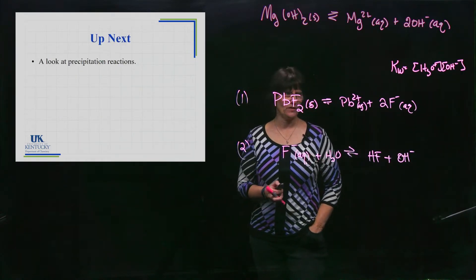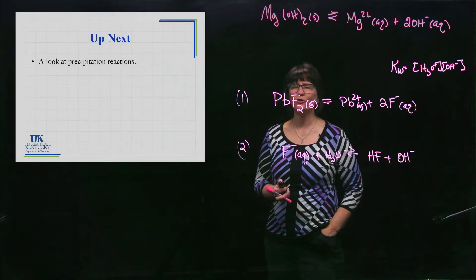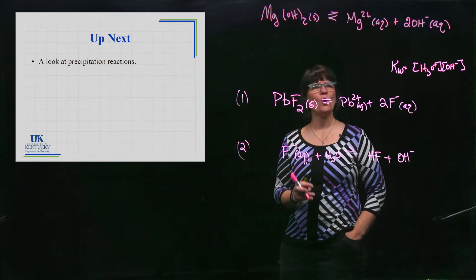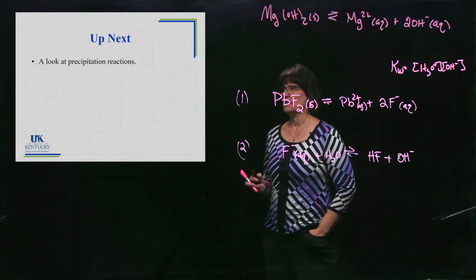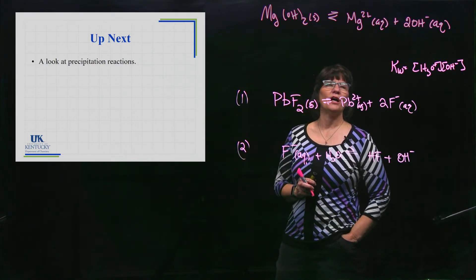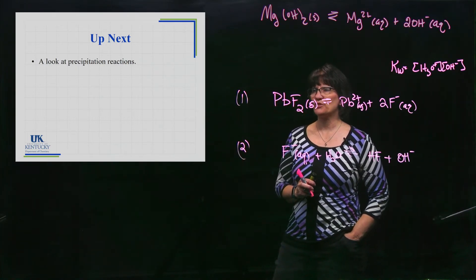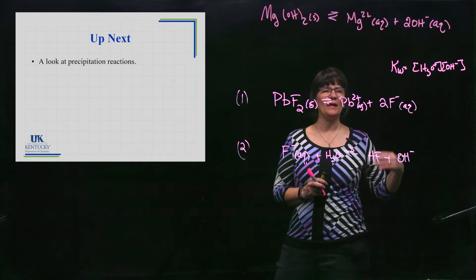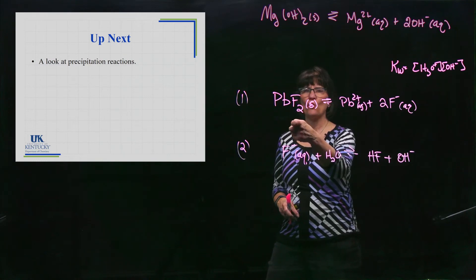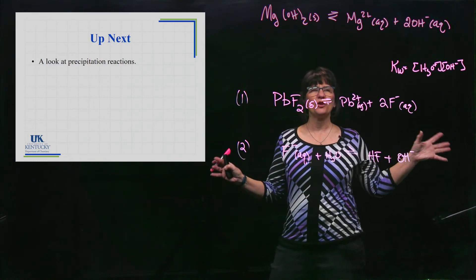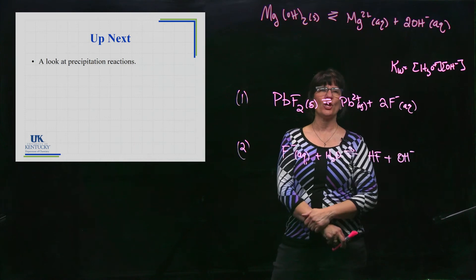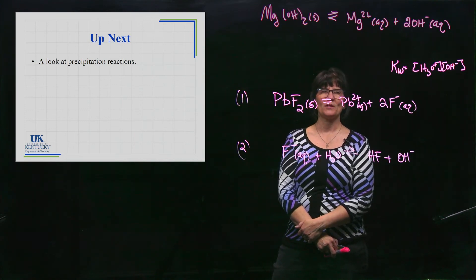We didn't do calculations here - we just needed to understand how pH affects solubility. What we're going to look at next is calculations pertaining to precipitation reactions: adding ions and seeing whether the reaction will shift to form a precipitate.